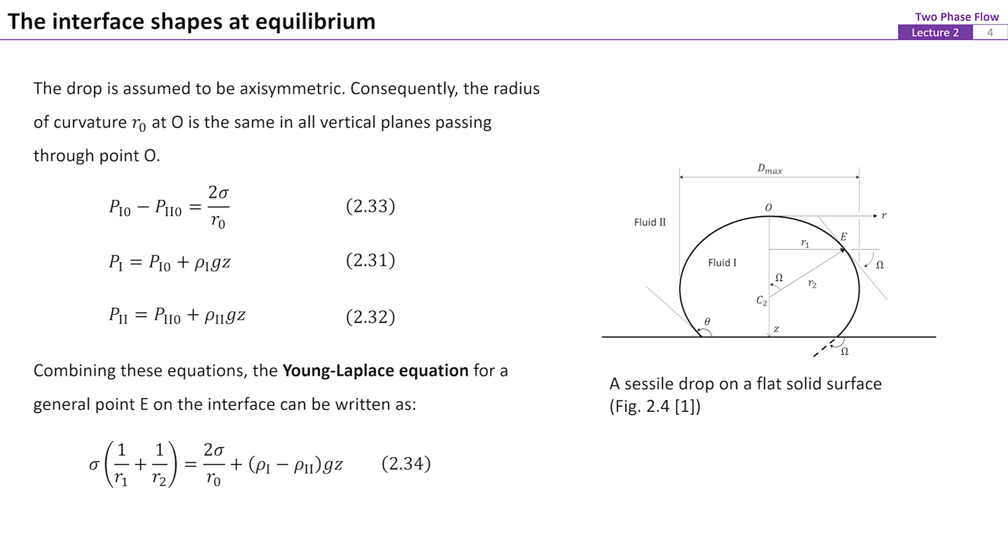The radius of the droplet at the topmost point is Ro. By using the Young-Laplace equation and hydrostatic analysis, an equation relates the local radii of the droplet fluid as a function of surface tension, gravity and densities of the fluid can be derived as equation 34.